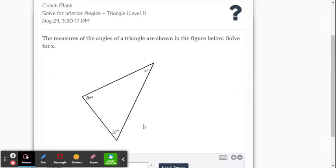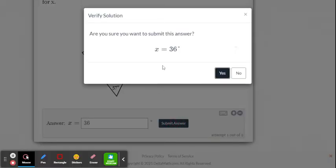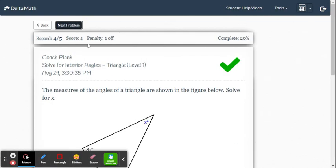And next problem. So 87 and 57, that's 144. And then you go 180 minus 144, which is 36, unless I made a mistake. But we'll find out. We make a mistake here. Oh, we did all right.